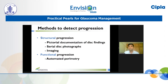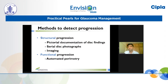Structural progression in glaucoma refers to progressive enlargement of the cup, progressive thinning of the neural retinal rims, and progressive thinning of the RNFL. Structural progression can be detected using pictorial documentation of disc findings — essentially very good disc drawings — which have become a challenge in this era of EMRs, but are very useful in detecting progressive changes. Serial photographs are also a very good method.